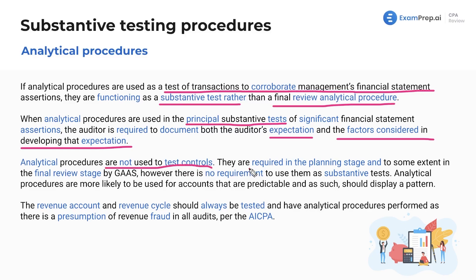Analytical procedures are not used to test controls — make note of that. They are required in the planning stage and are required to a limited extent in the final review stage by generally accepted auditing standards. However, there is no requirement to use them as substantive tests in the final review stage.